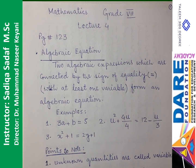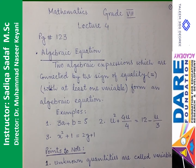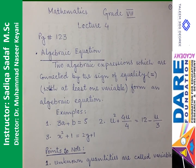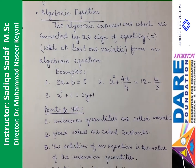Misal ke tor par: number 1 — 3A plus B is equal to 5. Number 2 — U square plus 4U divided by 4 is equal to 12 minus U by 3. Number 3 — X square plus 1 is equal to 2Y plus 1. In teenon examples mein kya khas baat hai jo hum inhe Algebraic Equation kahenge?